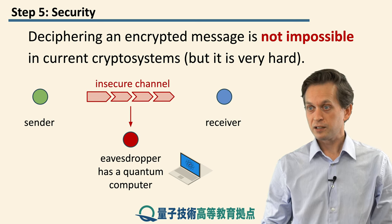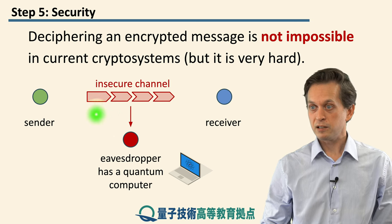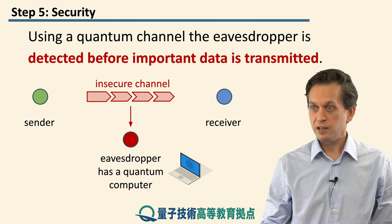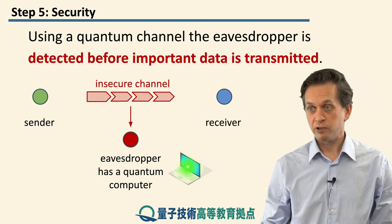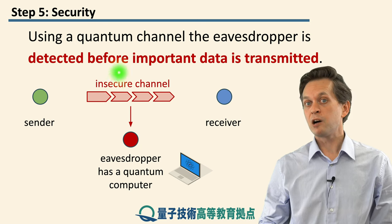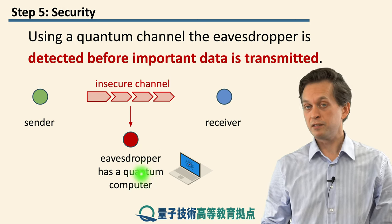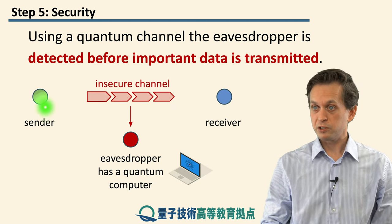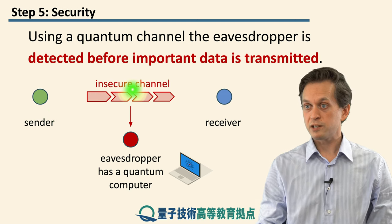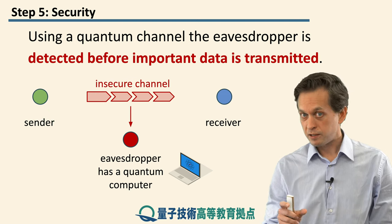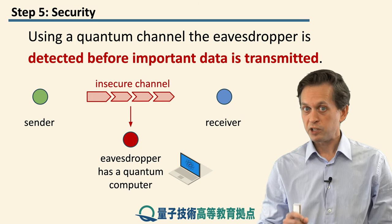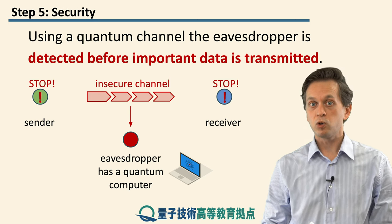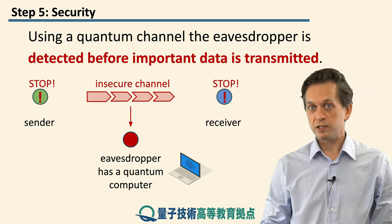On one hand, quantum technologies break current encryption, making the channel insecure. On the other hand, they allow us to communicate and encrypt data in different ways and distribute encryption keys in different ways. Using quantum technologies, even before the message itself is sent, if the eavesdropper starts tampering with the quantum message and starts measuring it, this gets detected by the sender and the receiver, and they know to stop their communication before any message is sent.